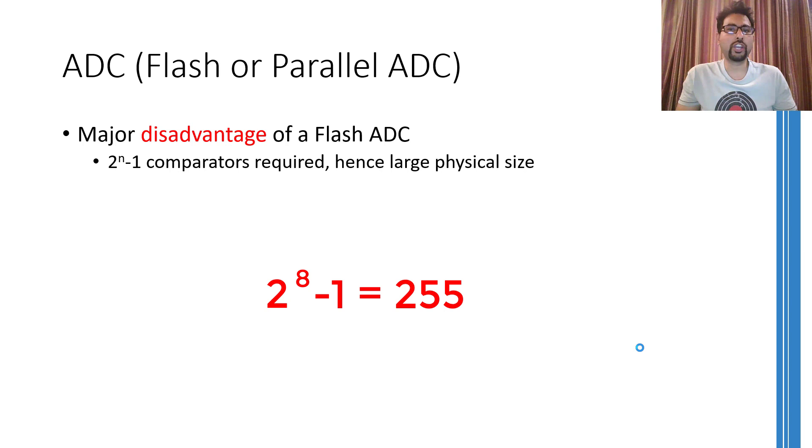For example, an 8-bit flash ADC will use 255 comparators. Now that is a large number if you consider that in a number of practical applications, 24-bit or higher ADCs are used.